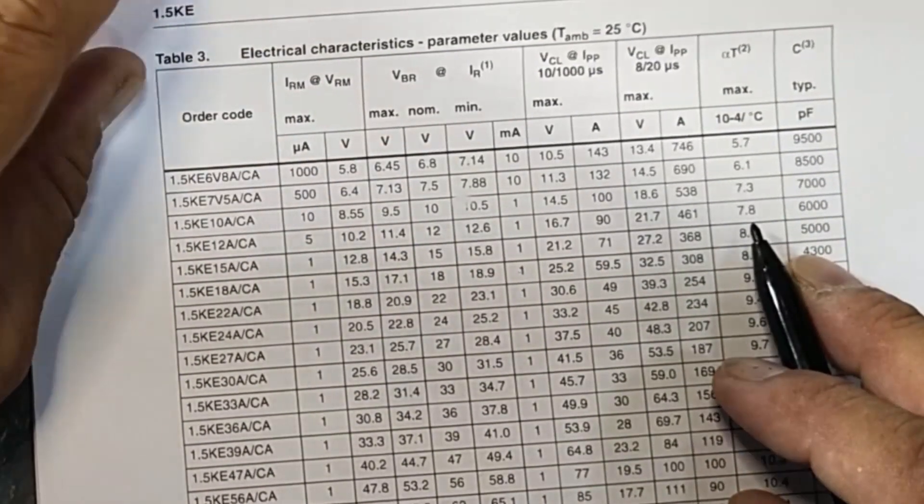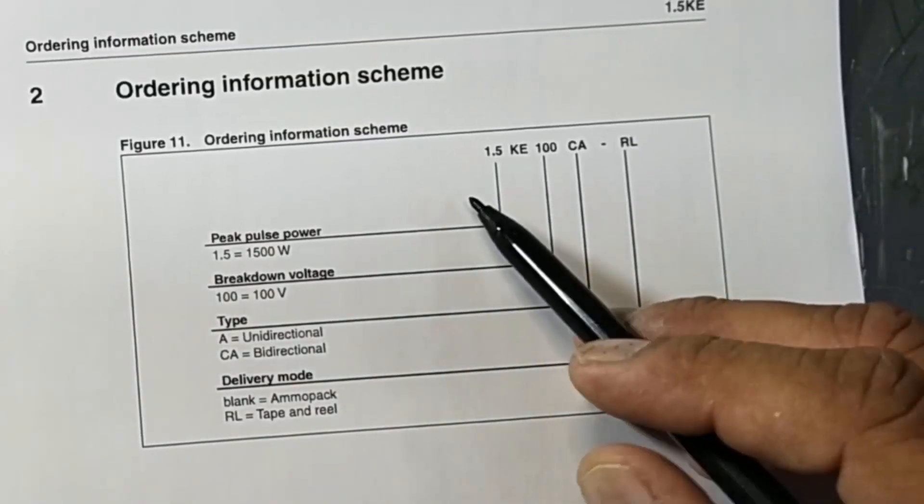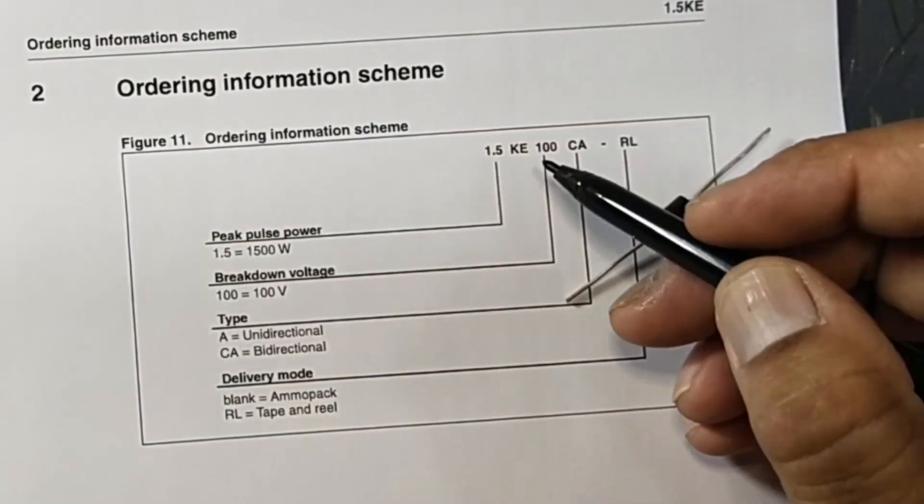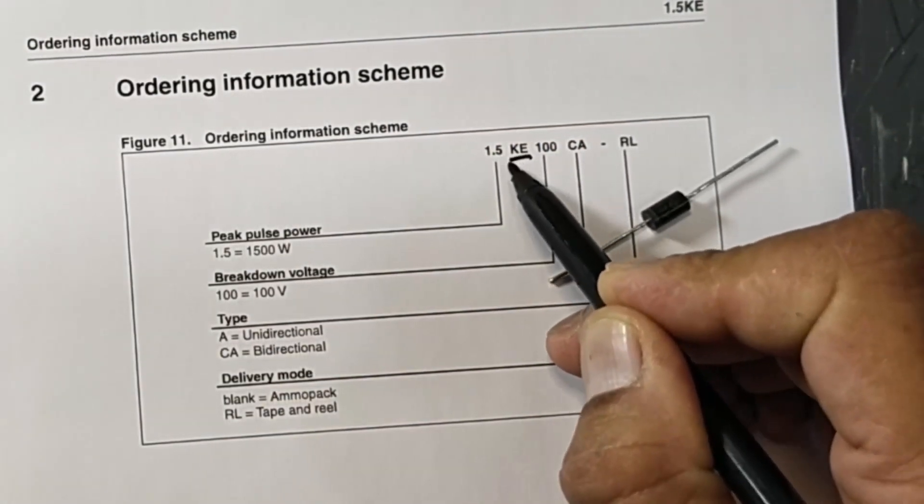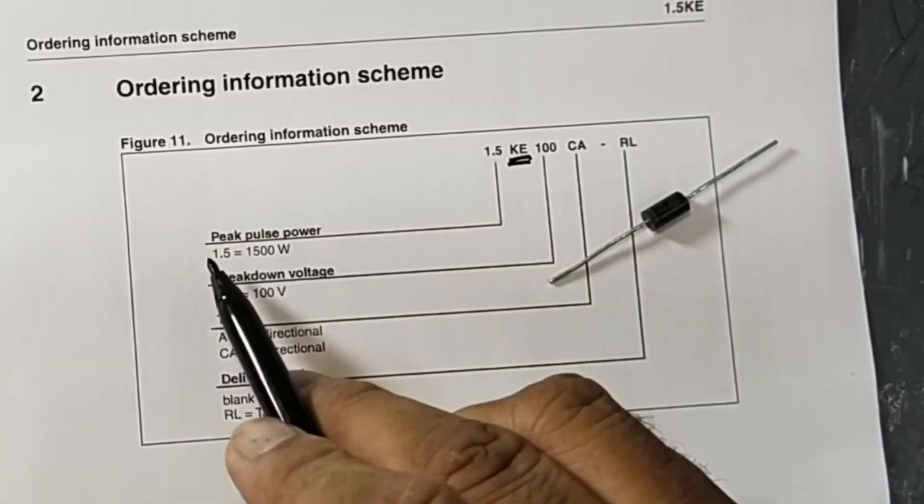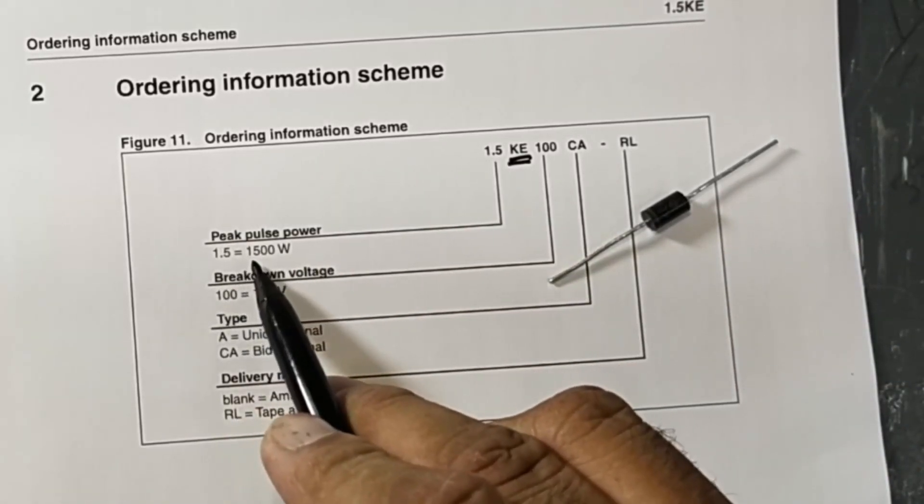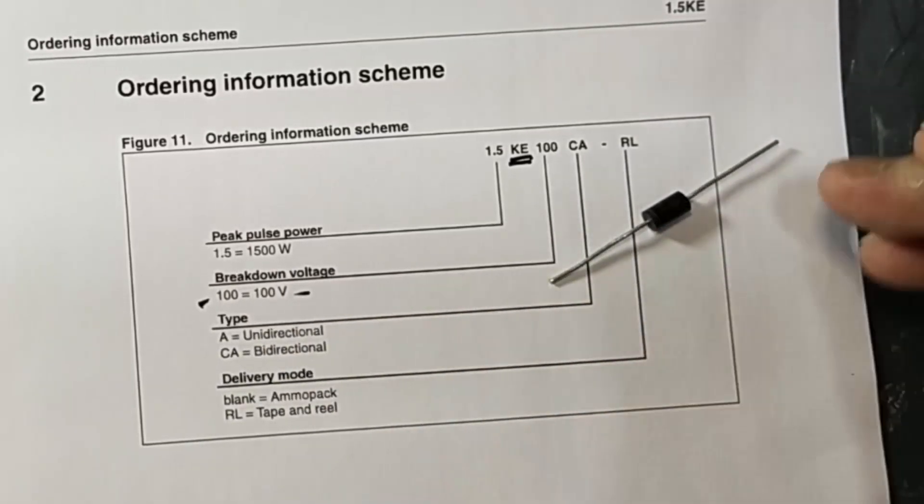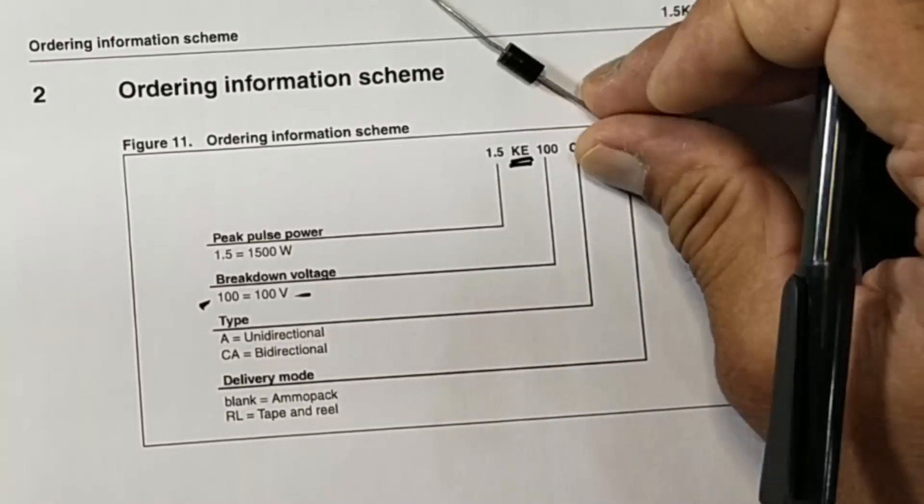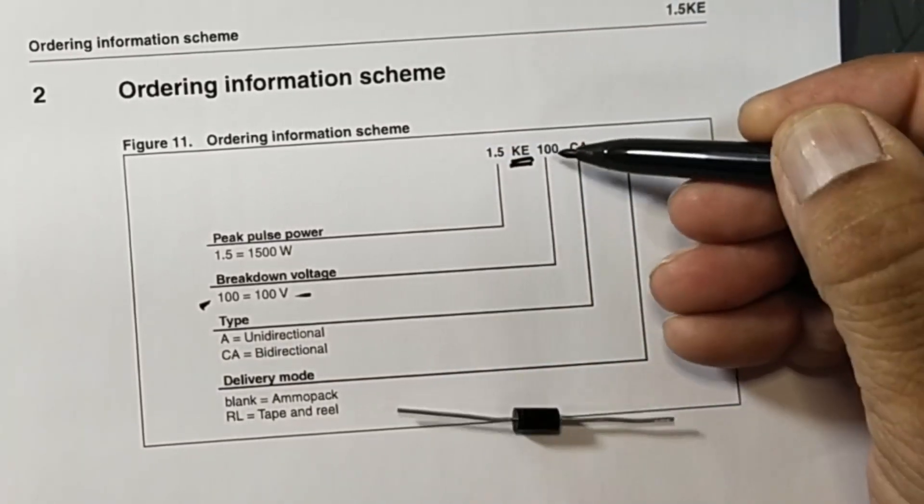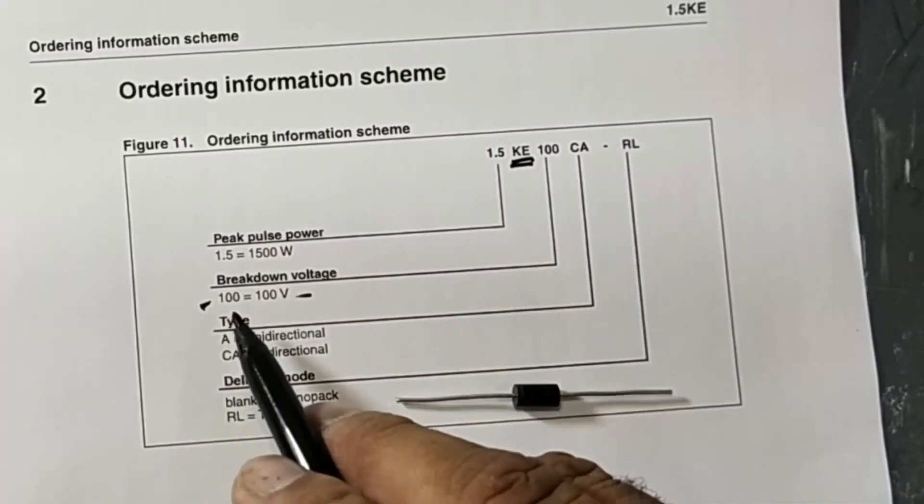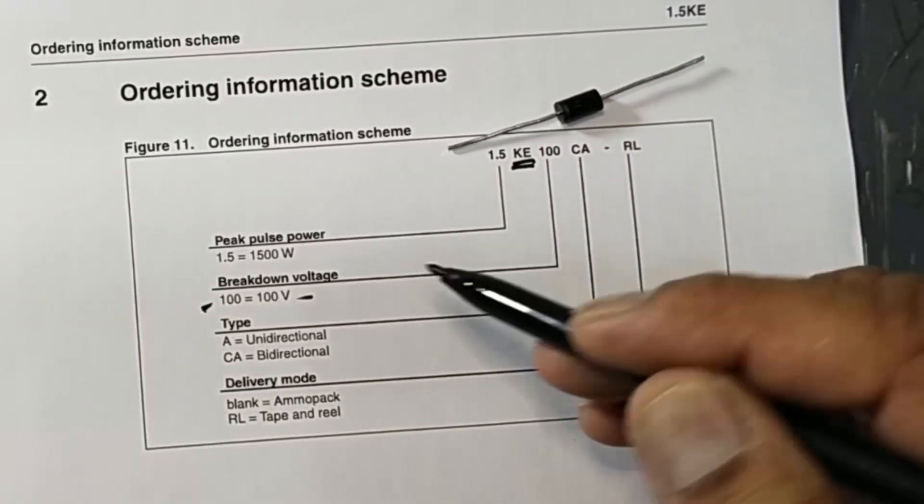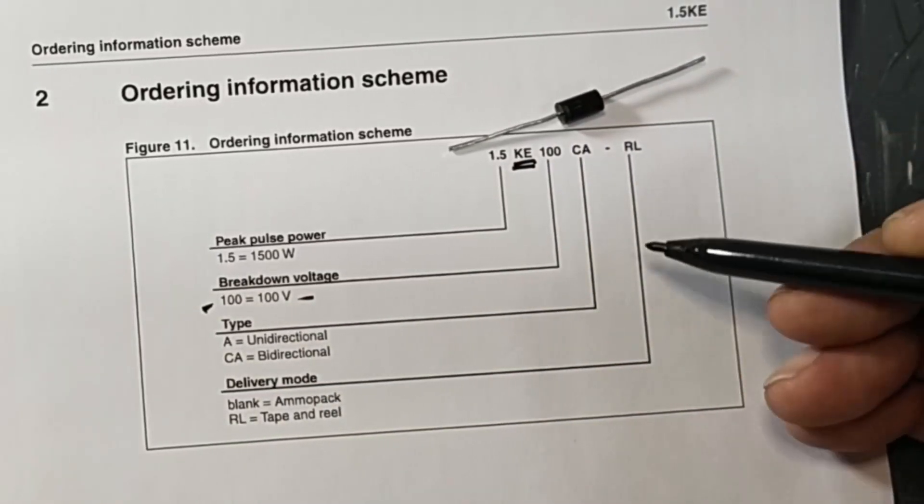Here we can see information about the diode. 1.5KE - that is the brand name. 1.5 peak pulse power - 1.5 is equal to 1500 watts. 100 breakdown voltage - so this diode has 12 volt. It is an example. If it is 100, that means 100 volt. In our case, in this diode case, it is 12 - 12 volt. So 12 volt clamping voltage.